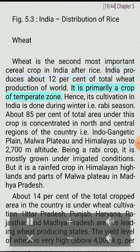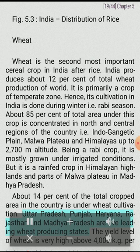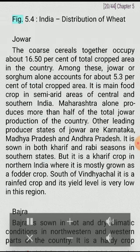Wheat is the second most important cereal crop in India after rice. India produces about 12% of total wheat production of the world. It is primarily a crop of the temperate zone; hence its cultivation in India is done during winter, i.e., the Rabi season. About 85% of total area under this crop is concentrated in north and central regions of the country — i.e., the Indo-Gangetic Plain, Malwa Plateau, and Himalayas up to 2,700 meters altitude. Being a Rabi crop, it is mostly grown under irrigated conditions, but it is a rainfed crop in Himalayan highlands and parts of Malwa Plateau and Madhya Pradesh. About 14% of the total cropped area is under wheat cultivation. Uttar Pradesh, Punjab, Haryana, Rajasthan, and Madhya Pradesh are the five leading wheat-producing states. The yield level of wheat is very high — above 4,000 kg per hectare — in Punjab and Haryana, whereas Uttar Pradesh, Rajasthan, and Bihar have moderate yields. States like Madhya Pradesh, Himachal Pradesh, and Jammu and Kashmir growing wheat under rainfed conditions have low yield.